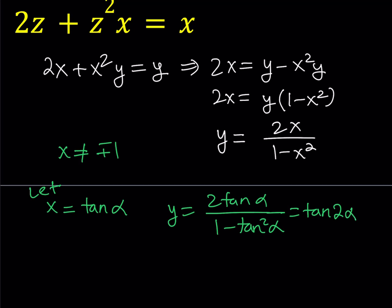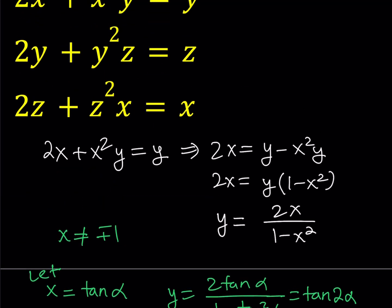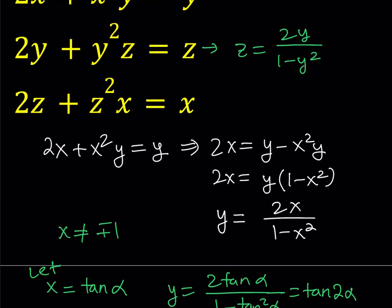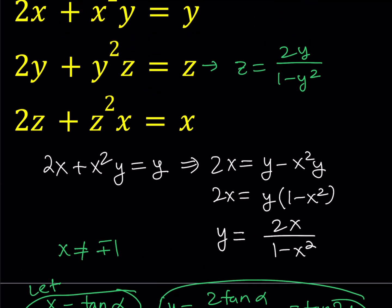This gives us y equals tangent 2α. Now we turn this into a trigonometric equation. Looking at the second equation and manipulating it the same way, we isolate z and factor out (y² minus 1), giving z equals 2y over (1 minus y²). Since y equals tangent 2α, substituting gives 2 tangent 2α over (1 minus tangent² 2α), which is the double angle formula again for 2α — so z equals tangent 4α.